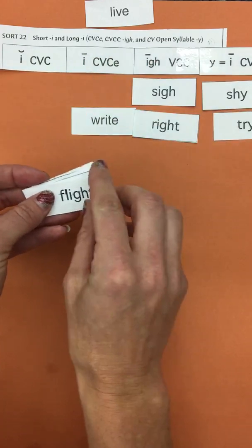So here you are on your sort record. You can write the three different ways of making the long I sound. Silent E, I-G-H, and Y equals I.